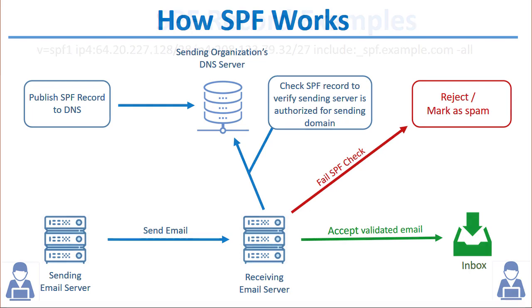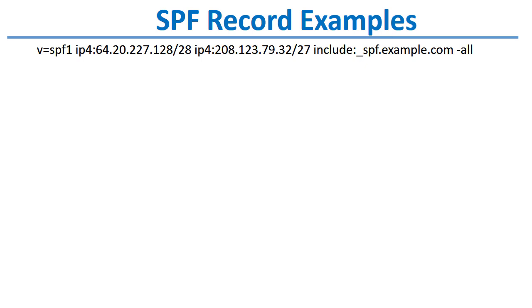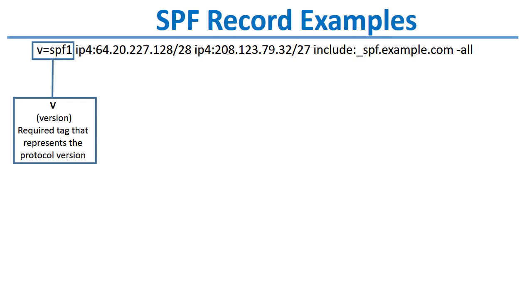Now let's talk about SPF records and how to set them up. This is on the outbound side, set up by the domain owner or mail server administrator to protect their outbound mail. Every SPF record has certain elements, such as the v= tag, which is the SPF version. They all begin with v=spf1, which is the standard tag your SPF record will start with.